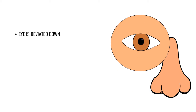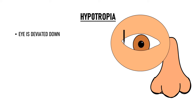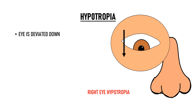If the eye is deviated in the opposite direction, that is when the eye is deviated down, then that condition is known as hypotropia. So in this picture, this person has right eye hypotropia.